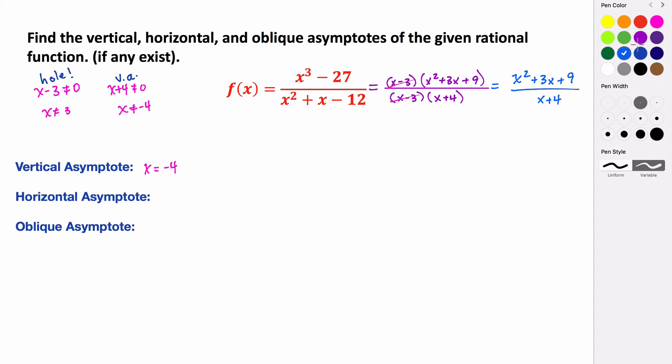So because the degree of the numerator is greater than the degree of the denominator, we know that there are no horizontal asymptotes. So there are no horizontal asymptotes, because the degree of the numerator, we can just say that it was the case where n was greater than m.